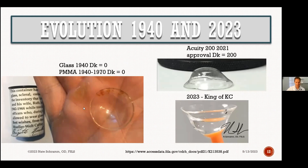My Bausch & Lomb rep showed me a glass scleral lens from the 1930s. Back in the late 30s and early 40s, when PMMA lenses became available, their sagittal depth was essentially zero. The Acuity 200 in 2021 has a sagittal depth of 200 microns. And this patient here is the self-proclaimed king of keratoconus — that's a very deep sagittal height of about 9,000 microns.